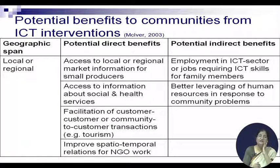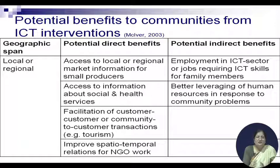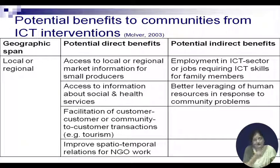Some potential benefits to communities from ICT interventions: at the local or regional level, the direct benefits include access to local or regional market information for small producers. We are talking about the three pillars of sustainable development — people, planet, and profit — and to make profits, we need access to market information.